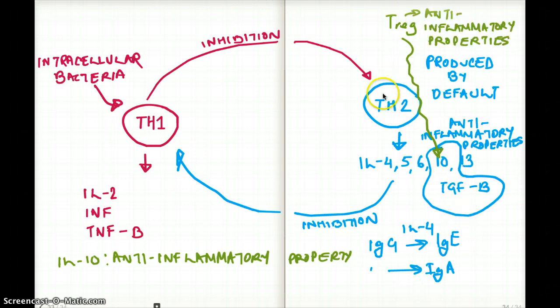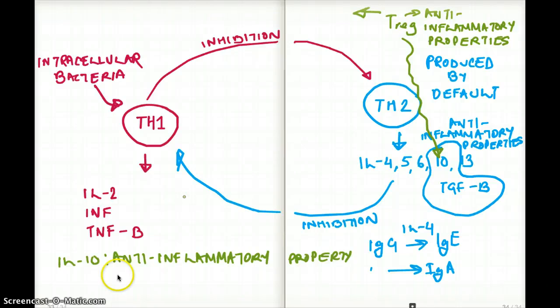But that's not the only function of T regulatory cells. T regulatory cells are also responsible for regulating the production of all kinds of T cells — cytotoxic T cells, T helper 1 cells, and T helper 2 cells. So T regulatory cells regulate the production and proliferation of all kinds of T cells.